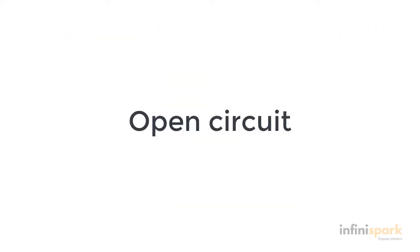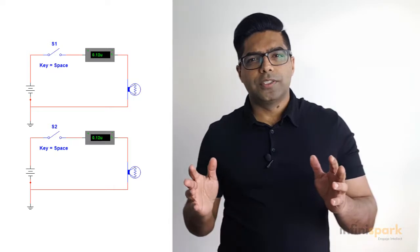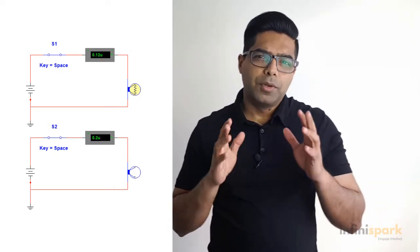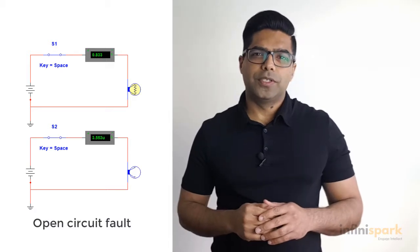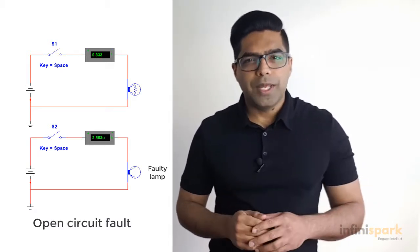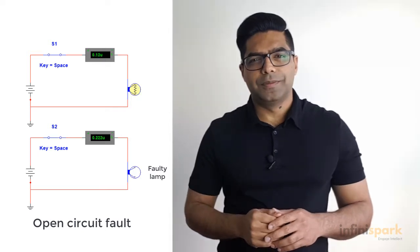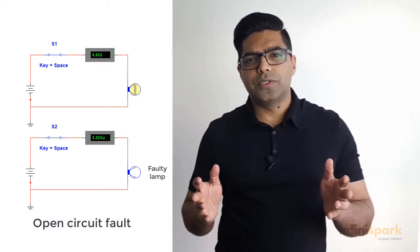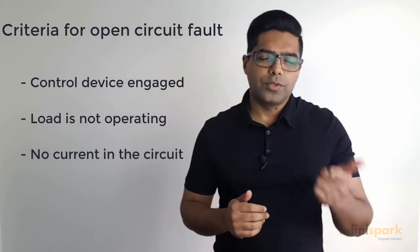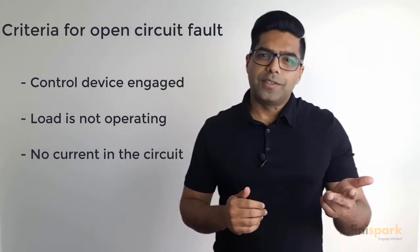Open circuit fault. Have you ever come across a situation when you try to turn on a light but flipping the switch doesn't work? The most likely culprit here is an open circuit fault and could be caused by a number of reasons, one of which may be that the light itself is faulty. So the criteria for an open circuit fault condition are: control device is engaged but the load is not working and no current is flowing in the circuit.